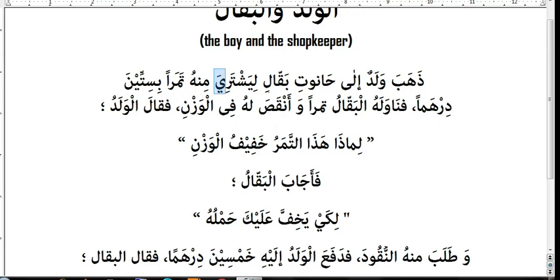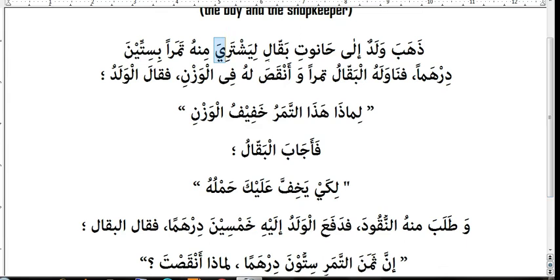Liyashteriya minho tamaran bisitin dirhaman — in order to buy from that shop dates worth sixty dirhams. Fanawalahu — fa means 'so,' nawalahu means 'he gave/handed over,' and al-baqalu is the shopkeeper. So the shopkeeper gave to the boy tamaran — dates.